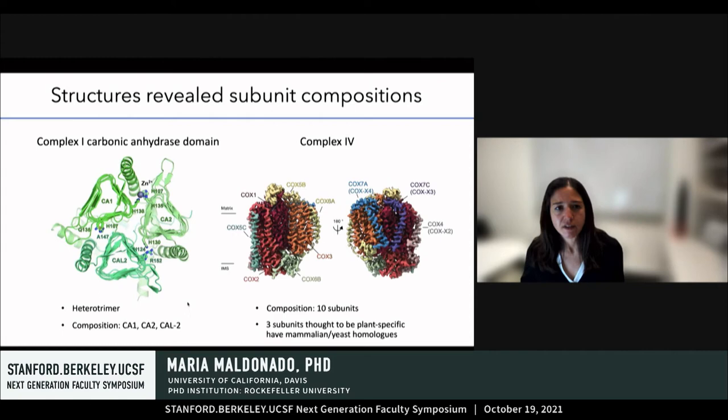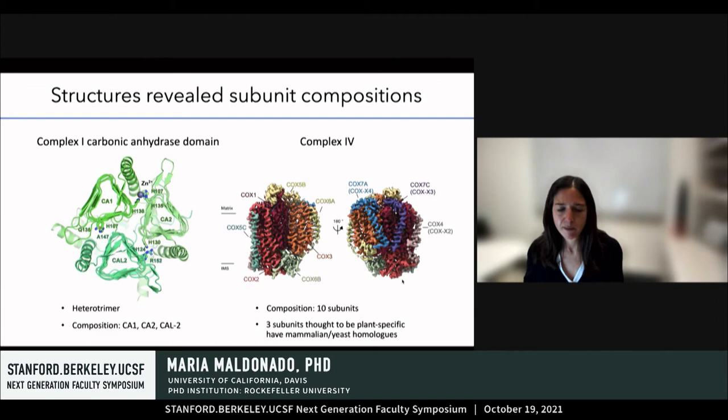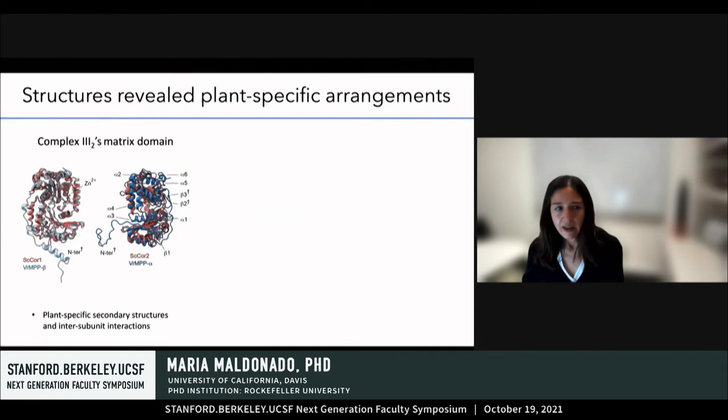Similarly, our structure of complex four showed us the number and identity of subunits in plant complex four. By looking at the structure, we determined that plant complex four has ten subunits, which is different from other organisms. We also determined that three subunits previously thought to be plant-specific — because their sequences are highly divergent versus mammals and yeast — are in fact homologues of subunits previously seen in other organisms.